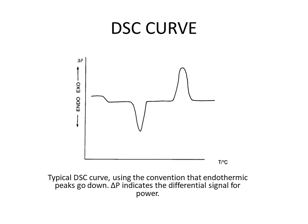Here is the typical DSC curve. On the x-axis there is temperature, while on the y-axis there is Delta P, which indicates the differential signal for power. We can see various peaks — downward and upward. Downward peaks exhibit endothermic processes, while upward peaks exhibit exothermic processes.